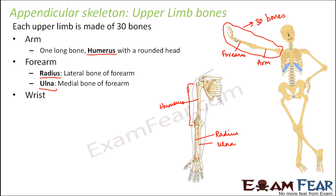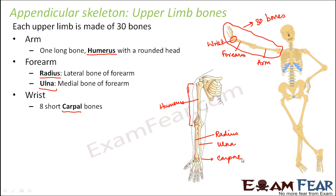Next is the wrist. You can move your wrist because of the bones present in it, and each wrist bone has a very unique shape. There are eight short carpal bones in the wrist. These bones are called the carpal bones, and the wrist bones are collectively referred to as carpal bones.